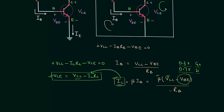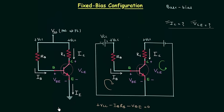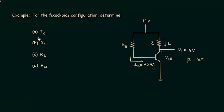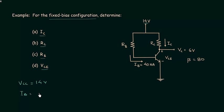I hope this configuration is clear. Now we will solve one example. We need to calculate the output current Ic, resistance Rc, resistance Rb, and the output voltage Vce for the fixed bias configuration. In this circuit, Vcc equals 14 volts, Ib equals 40 microamps, beta equals 80, and the potential at point C, Vc, equals 6 volts.